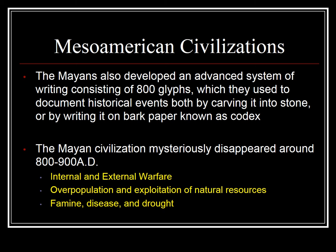The classical Mayan civilization came to an end around 900 AD. It's not completely sure why. Some believe internal and external warfare brought them down; others believe overpopulation and exploitation of natural resources did it; others believe famine, disease, and drought. We do know the Maya practiced slash-and-burn agriculture, which saps the ground of its nutrients and doesn't allow sustaining large populations over long periods. When the ground can't produce food, the population collapses. That's likely what did them in.